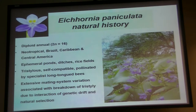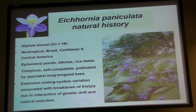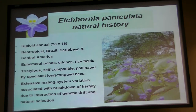Eichhornia paniculata is an annual that occurs in ephemeral pools in very unusual environments — vernal pools in the Caatinga region of northeastern Brazil, which has the highest coefficient of variation of rainfall of any environment in the New World tropics. It's a very unpredictable climate. Throughout these pools, in an area about half the size of France, are populations of this annual, showy-flowered diploid Eichhornia, related to the famous water hyacinth which clogs canals and drainage ditches throughout the world.